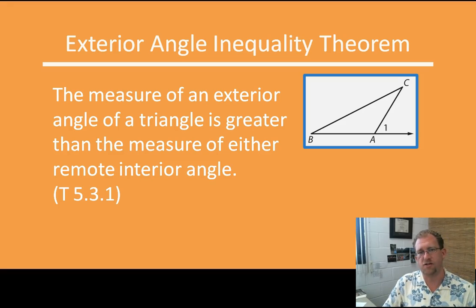I have exterior angles again, exterior angles and remote interior angles. And we've already looked at the fact that exterior angles are the sum of the two remote interior angles. And so if this angle plus this angle equals this angle, then we can say very comfortably that angle 1 is greater than either of the two remote interior angles, because you've got to add them together to make this. And so, therefore, the exterior angle inequality theorem is that the measure of an exterior angle of a triangle is greater than the measure of either remote interior angle, because you have to add those two together to make the same measure of the exterior angle.